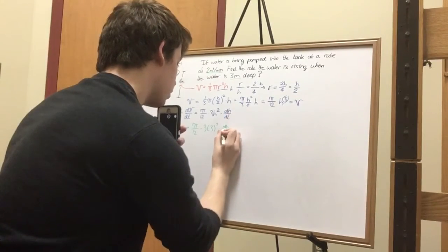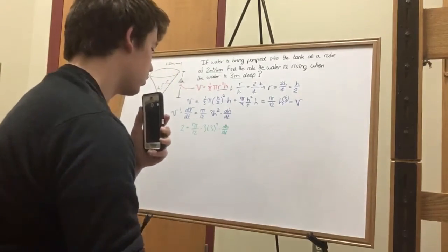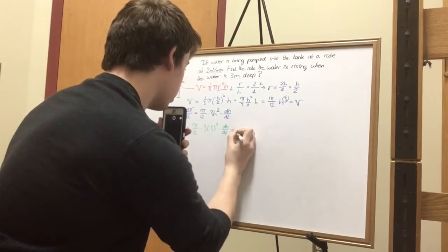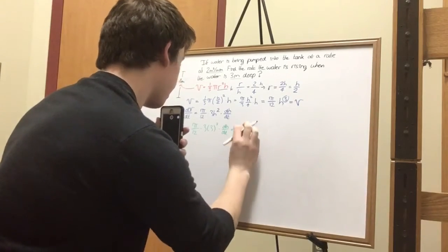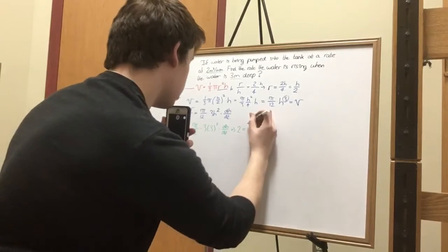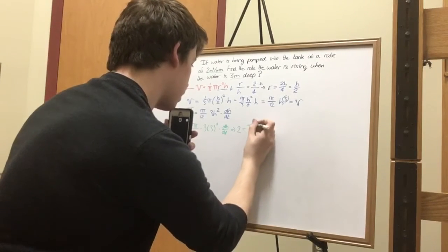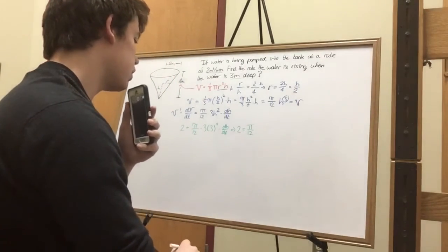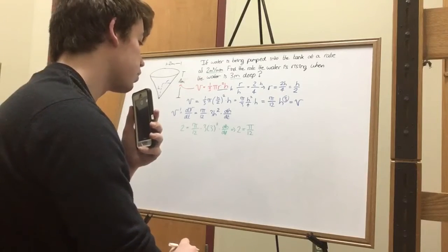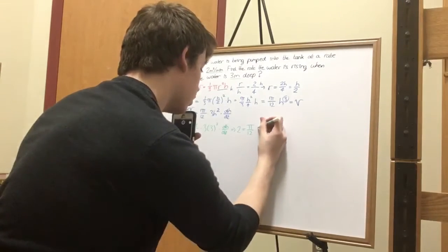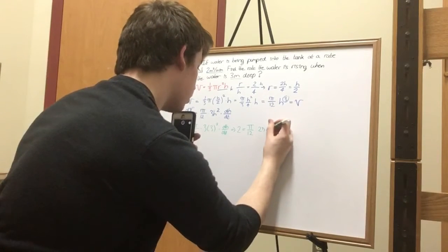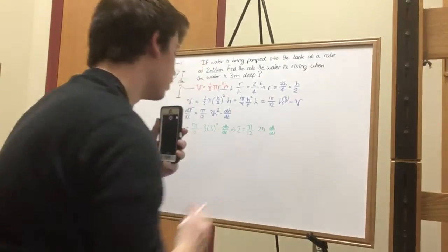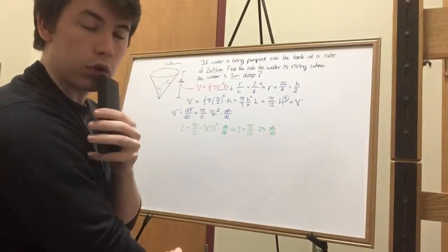Yeah, you get the point. So carry that out further. 2 equals over twelve. That's three times three squared is nine, times three, that's twenty-seven. Twenty-seven times dh over dt. Great, going even further down the cave.